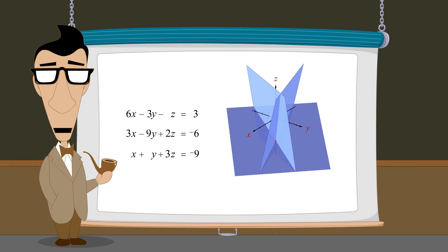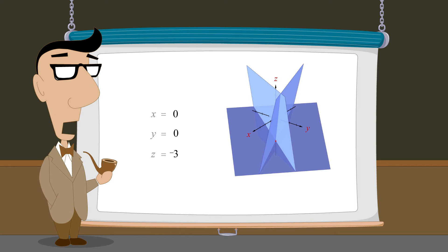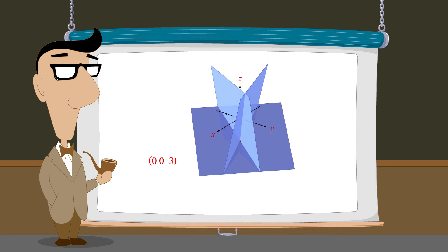We can describe this solution either by using three equations or represent it as an ordered triple which gives us the values of the x, y, and z coordinates of the solution point.